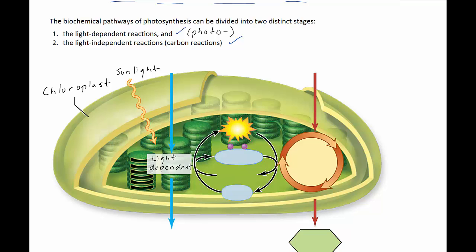That sunlight energy is captured by pigments in our thylakoid membrane. They're referred to as light-dependent because in the absence of light these reactions cannot occur. The sunlight energy that's captured by pigments is then stored into two energy-rich molecules, which are ATP and NADPH.